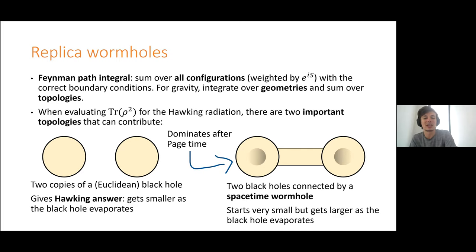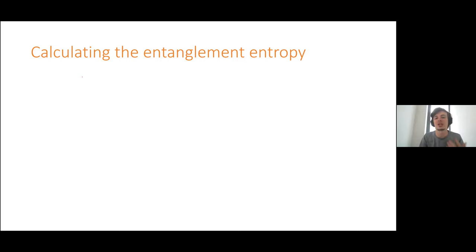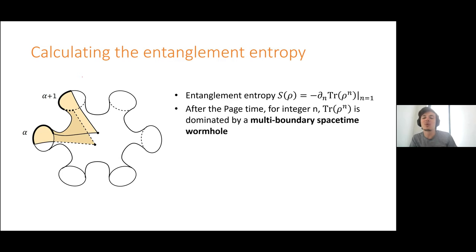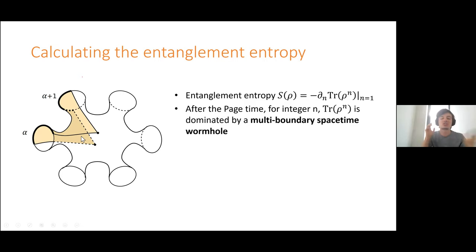At a certain point, this contribution from this crazy spacetime wormhole becomes bigger than the tiny contribution from just ordinary two separate black holes. The point where that changeover happens is exactly the page time — exactly the point where we start seeing the noisiness of the Hawking radiation decrease. Of course trace rho squared is not a great quantity to compute noisiness — really we want to compute the entanglement entropy, minus trace of rho log rho. There's a nice formula for the entanglement entropy using L'Hôpital's rule: just take trace of rho to the n for arbitrary values of n and then take its derivative as n goes to 1.